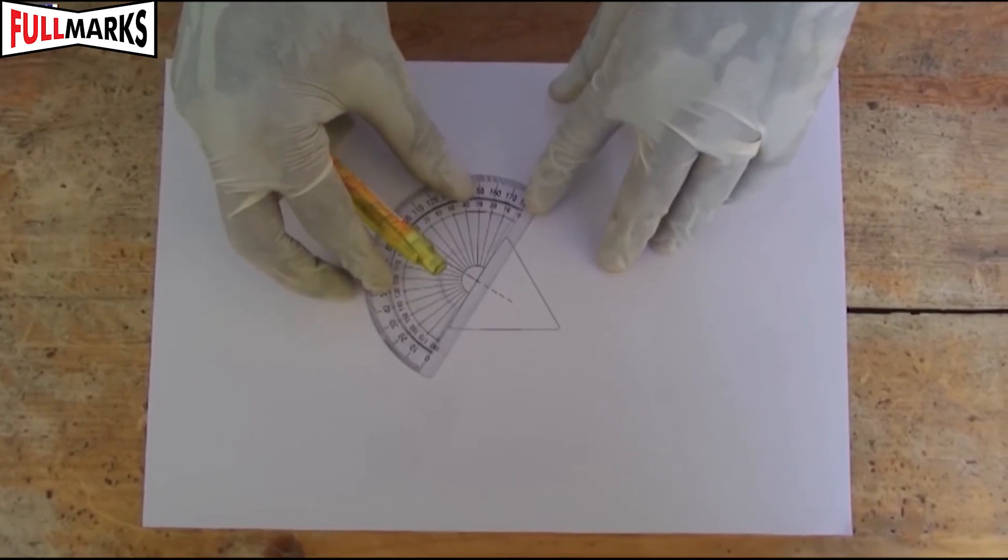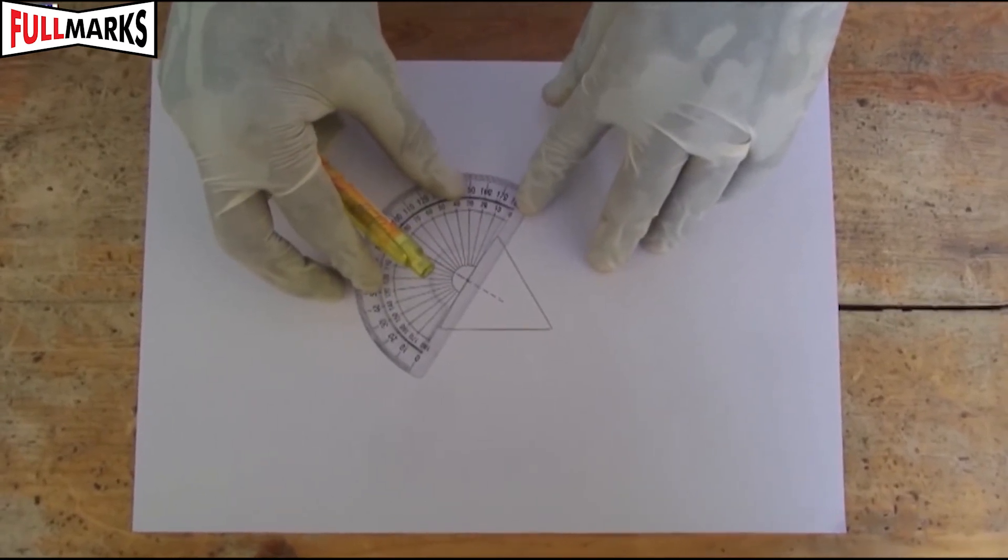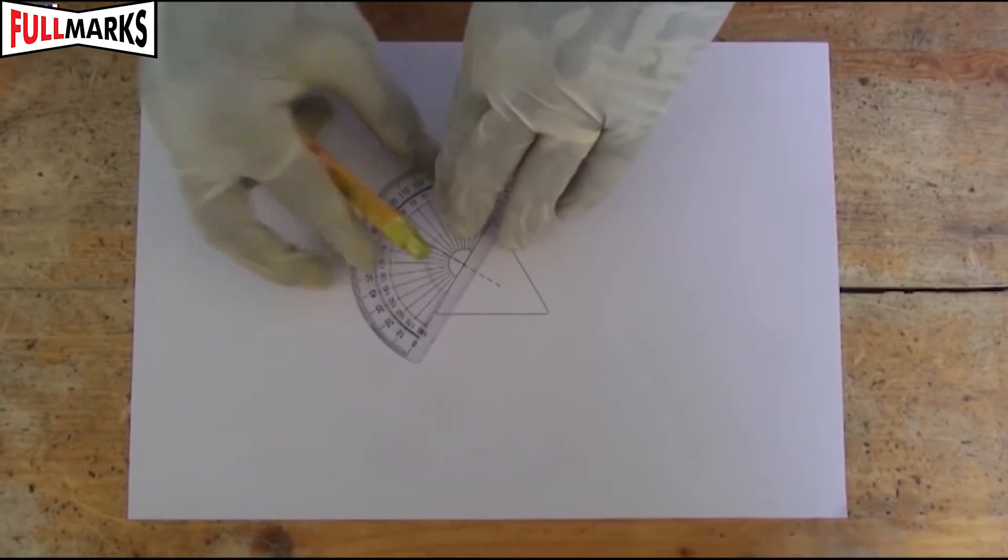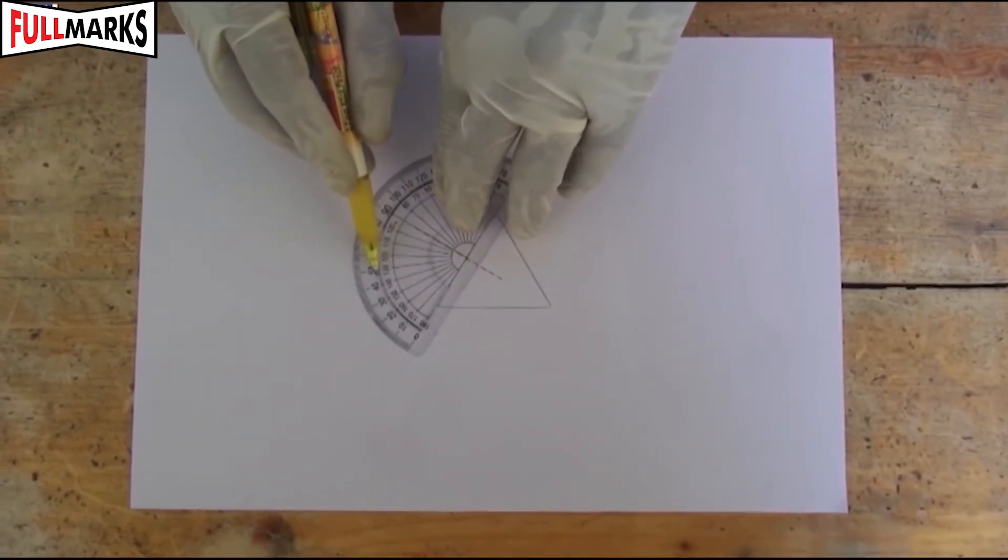Also, draw a straight line PE making an angle preferably between 45 degrees and 75 degrees.